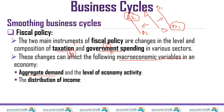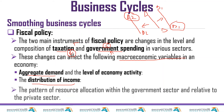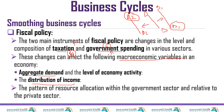The other variable affected by the adjustment of tax and spending is the distribution of income. In South Africa, we use a progressive income tax system, which charges high income earners more tax than low income earners. The adjustment of tax rates affects the distribution of income — some groups get more money while others see their income compromised. Then the next one is the pattern of resource allocation within the government sector and relative to the public sector.